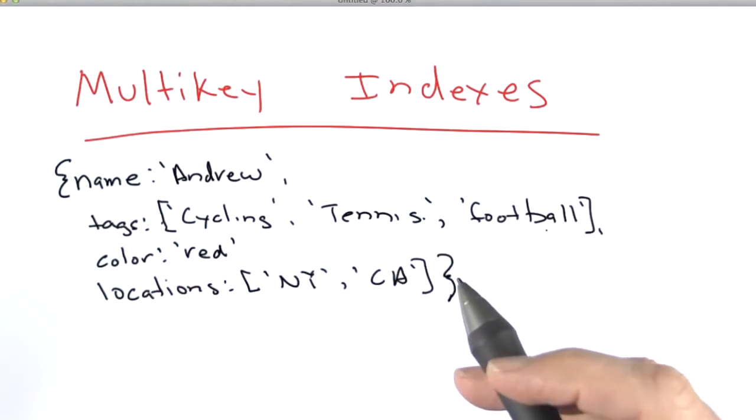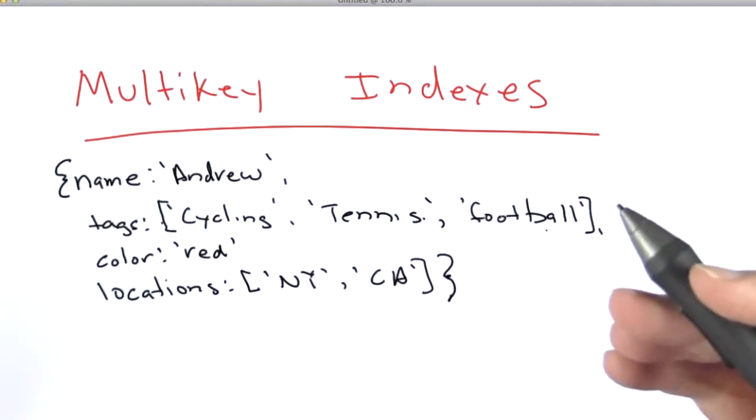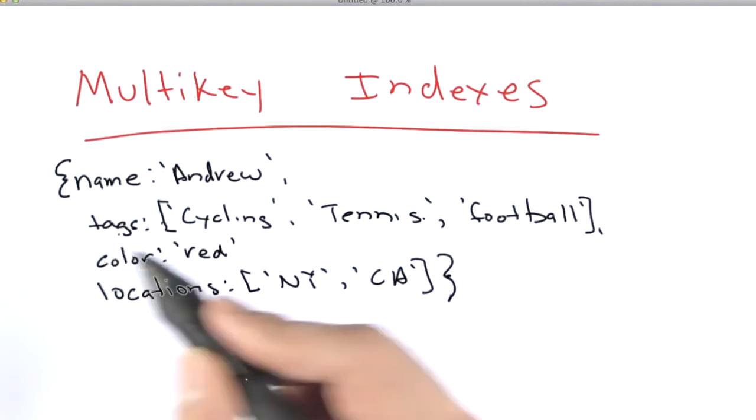If you want to perform queries on this collection, and you want those queries to be fast, you want to add an index on tags, if you're trying to query on tags.